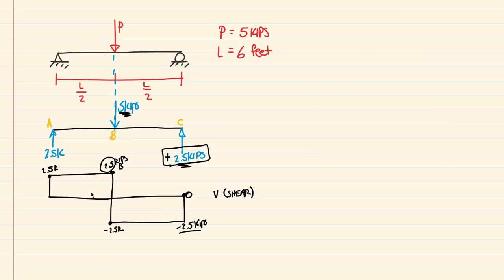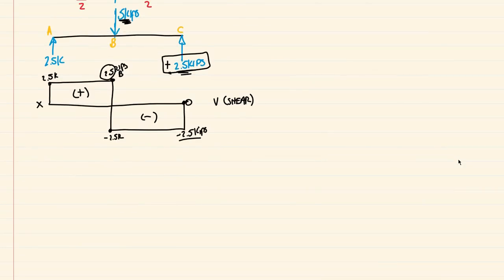I like to point out the positive and negative areas on the shear diagram because we're going to use that to determine the moment diagram. Any shear above the x-axis is positive, and anything below is negative. These concepts of positive and negative shear are key to getting our moment diagram graphically.